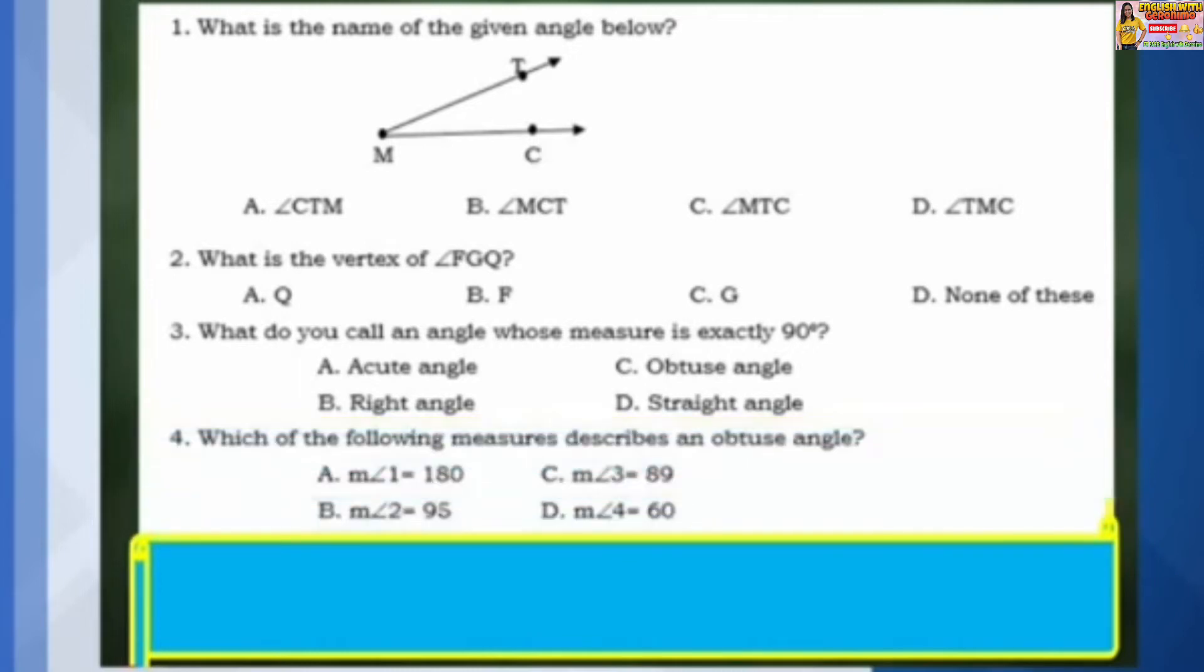Number 4: Which of the following measures describes an obtuse angle? A: Measure of Angle 1 is equal to 180. B: Measure of Angle 2 is equal to 95. C: Measure of Angle 3 is equal to 89. D: Measure of Angle 4 is equal to 60.